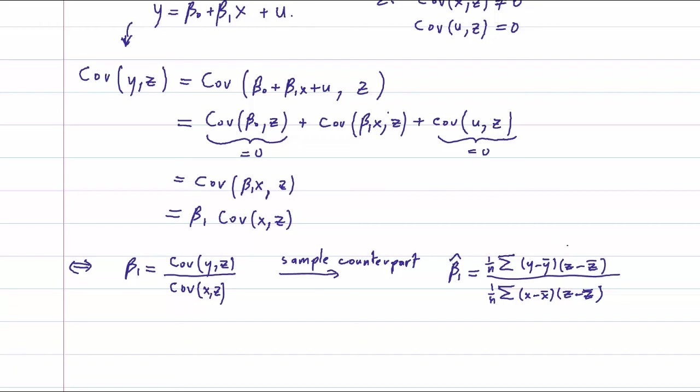And we recognize the formula for the sample covariance between y and z, and the formula for the sample covariance between x and z. The one over n here is not necessary, but we are going to use it for the proof.